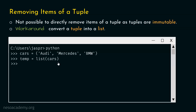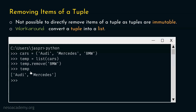Let's hit enter. Let's say we are interested in removing BMW. For this, we will use the remove() method. With the help of remove(), we can remove any item from our list. Let's type: temp.remove('BMW'). With this command, we can remove BMW from our list temp. Let's hit enter and type temp. We are getting this list with two items: Audi and Mercedes.